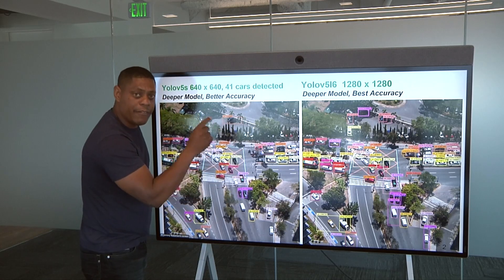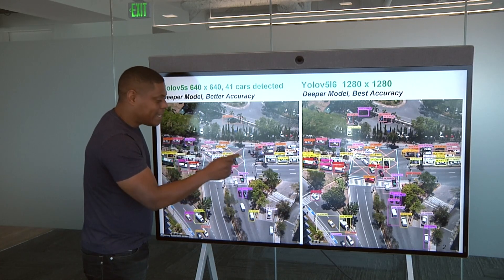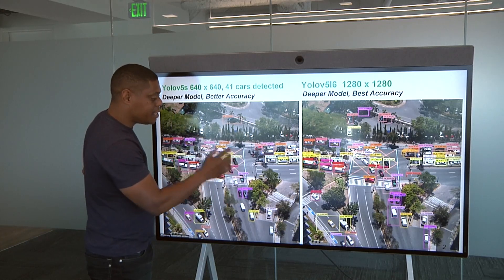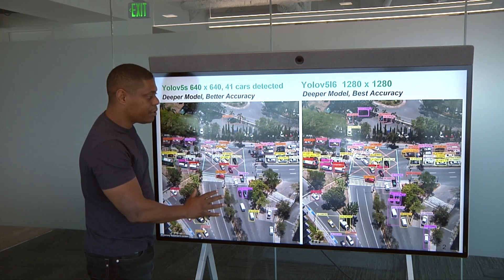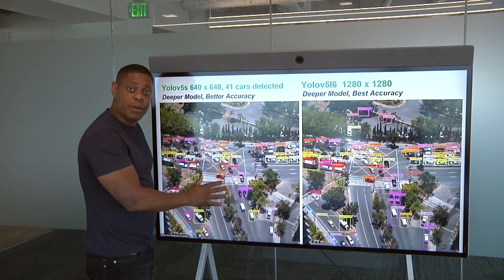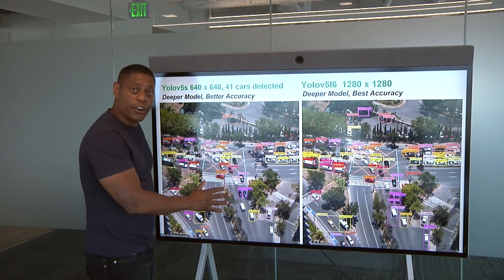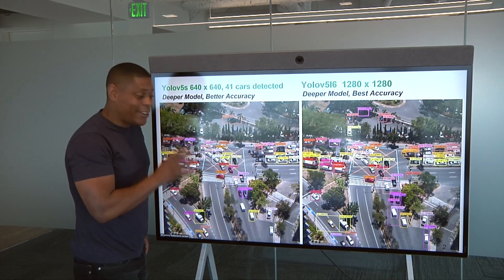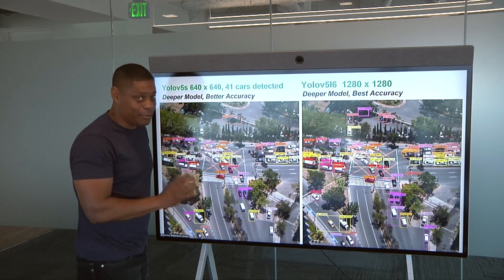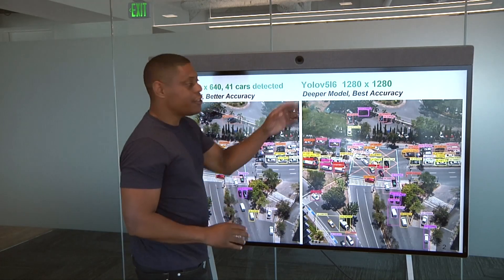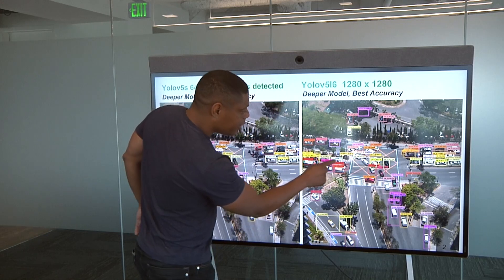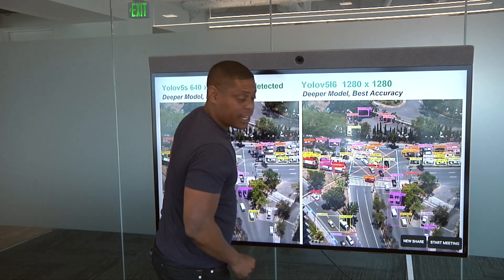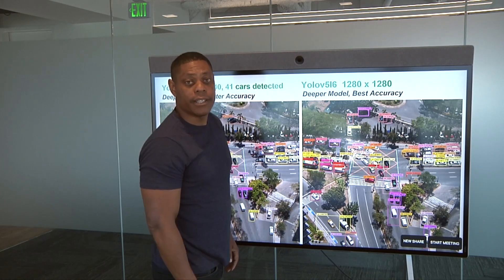If you're not using super-resolution, getting these very small objects is not going to be possible. This particular network doesn't capture them, and it also misses some of the larger objects like the cars. If you have an application where you need to find pedestrians — which is pretty important — then you're going to have to go to the super-resolution model. There, you can see both persons detected, even though they're very small in the scene.